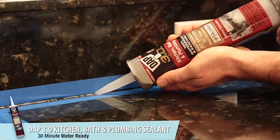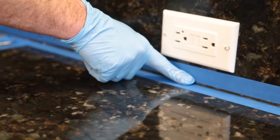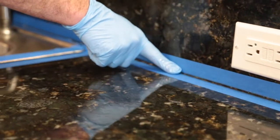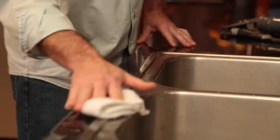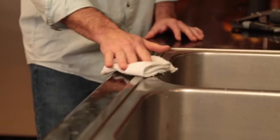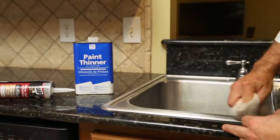Use this same process to seal other areas in your kitchen, like the backsplash behind your countertop and the joint where the backsplash meets the wall. When you're done, clean any excess sealant from surfaces, tools, or hands. Clean up depends on the type of sealant you're using. DAP 3.0 requires solvents for cleanup.